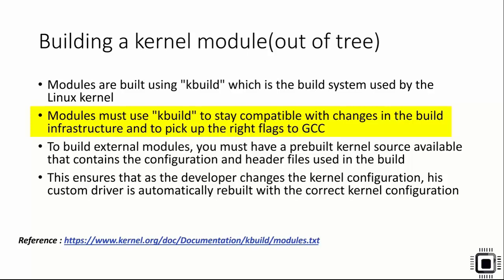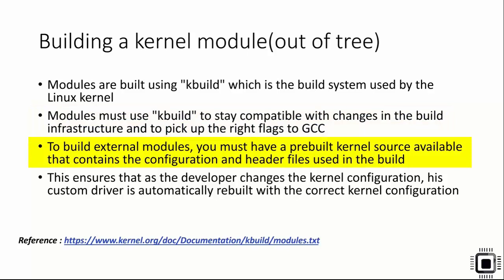When you compile a user-level program you use GCC with various compiler flags and linker flags. When building a kernel module you need not worry about which compiler switches to use - you just invoke the kernel build system and it takes care of using the right compiler switches. To build external modules you must have a pre-built kernel source available that contains the configuration and header files used in the build.